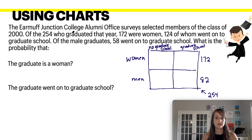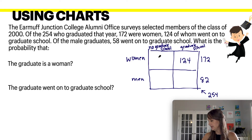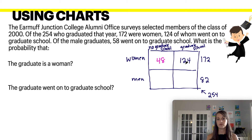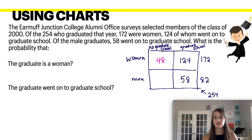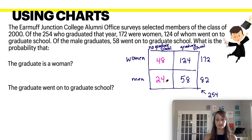Of the 172 women, 124 went to graduate school, so 48 did not. The 82 men were found by subtracting 254 minus 172. Of the male graduates, 58 went to graduate school, meaning 24 did not. The total graduates is 254.